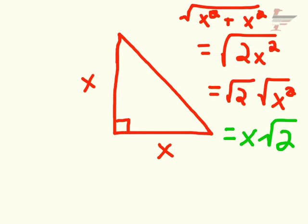And in any 45-45-90 triangle, we find that the sides have the ratio 1 to 1 to the square root of 2.